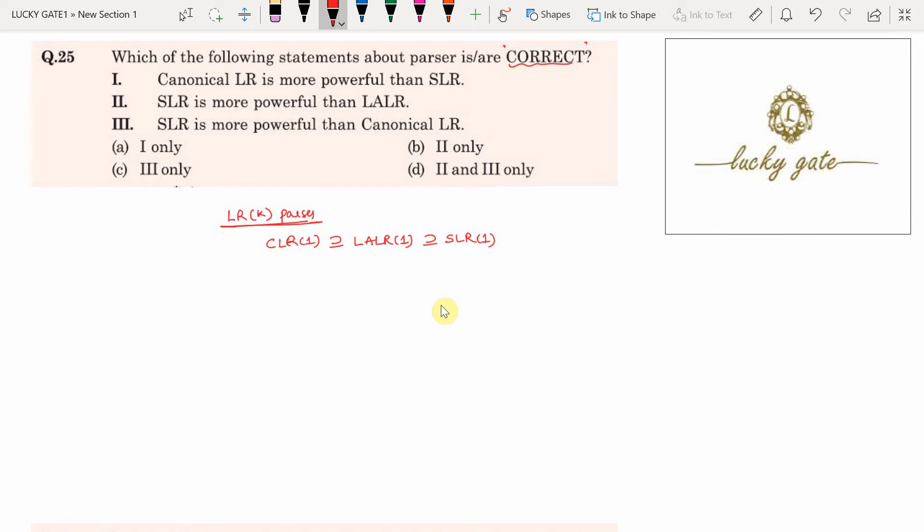CLR of 1 is accepting more classes of grammars. Because CLR of 1 is accepting more classes of grammars, I can conclude that CLR of 1 is most powerful.